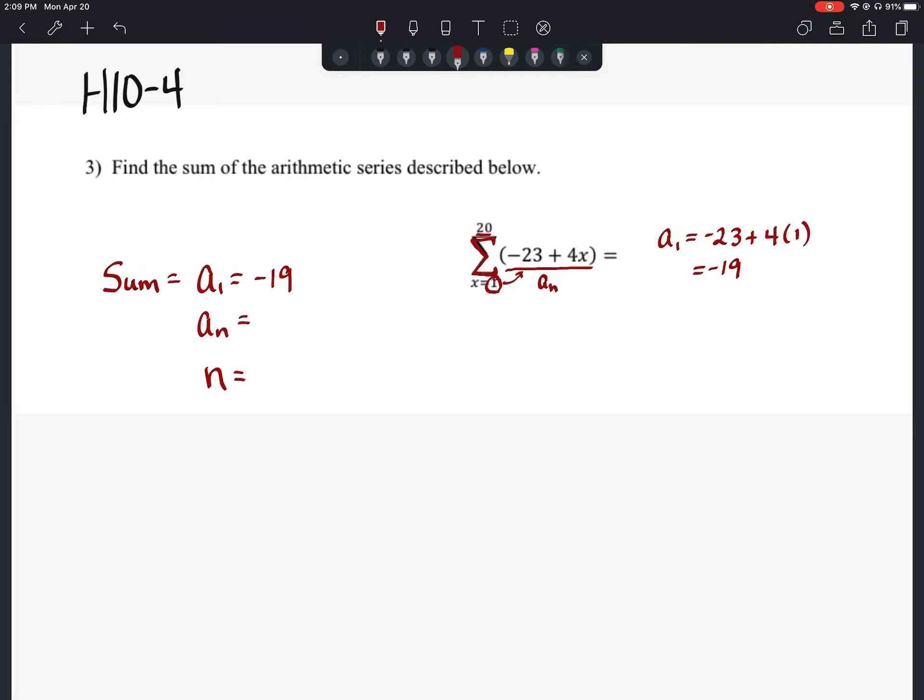Now, the 20th term is going to end up being our last term, right? So we'll say a sub 20 is going to equal negative 23 plus 4 times 20. 4 times 20 would be 80. So we have negative 23 plus 80, which I believe should be positive 57. So our nth term is 57.